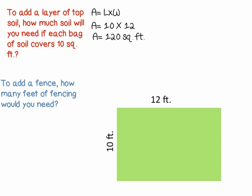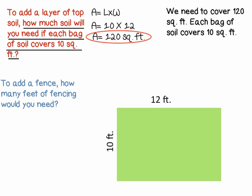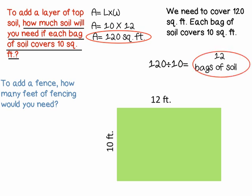But that's not all we need to know. We now know the area, but we still need to find out how much soil we will need if each bag of soil covers 10 square feet. We know we need to cover 120 square feet, and each bag of soil covers 10 square feet. So, in order to find out how many bags we need, we'll divide 120 square feet by 10 square feet to find that we need 12 bags of soil, because 120 divided by 10 is 12.